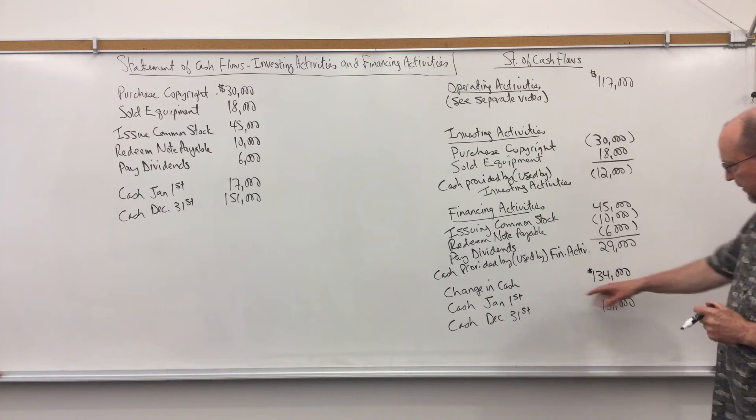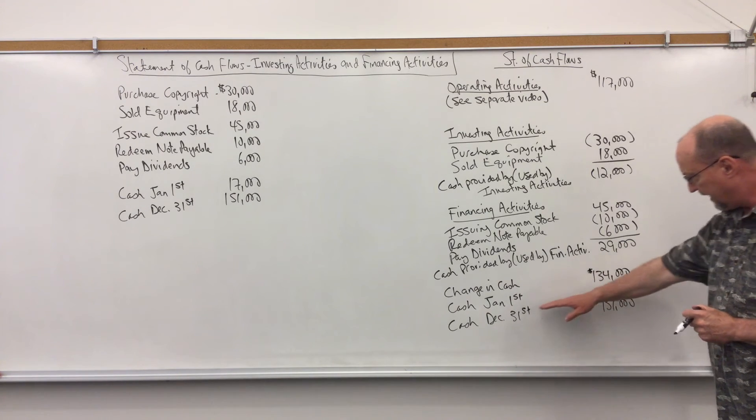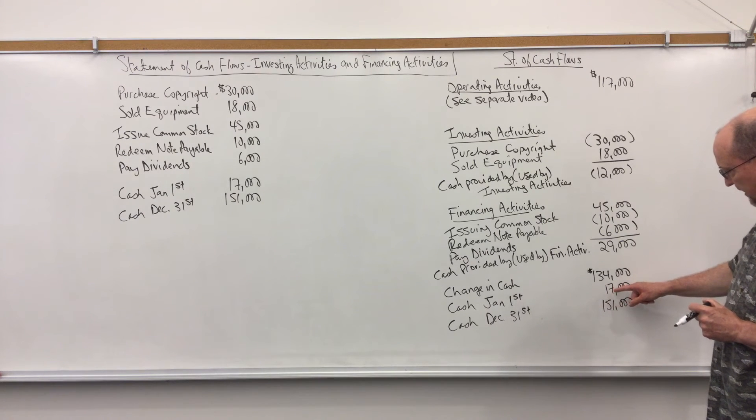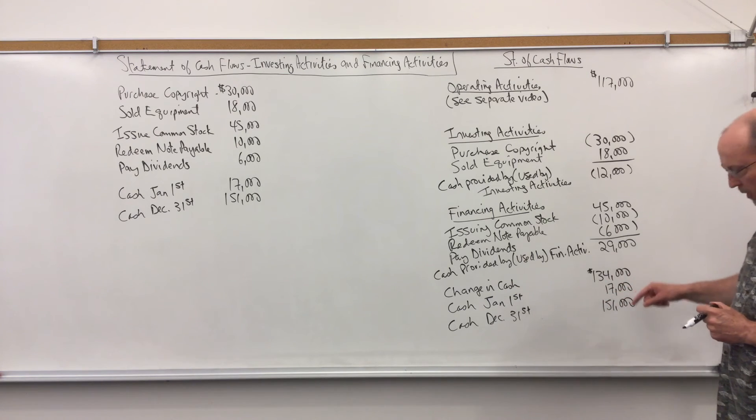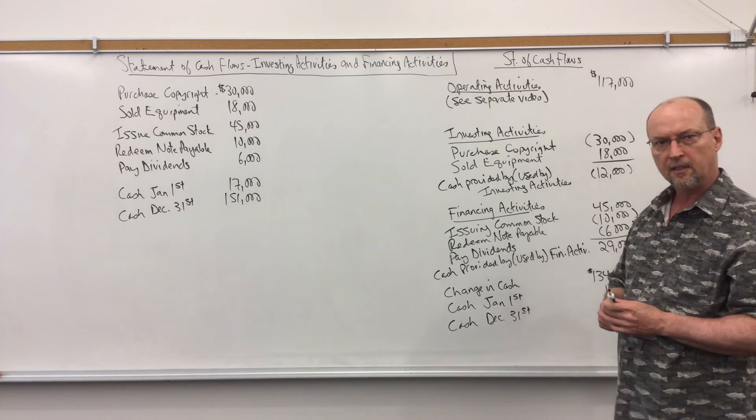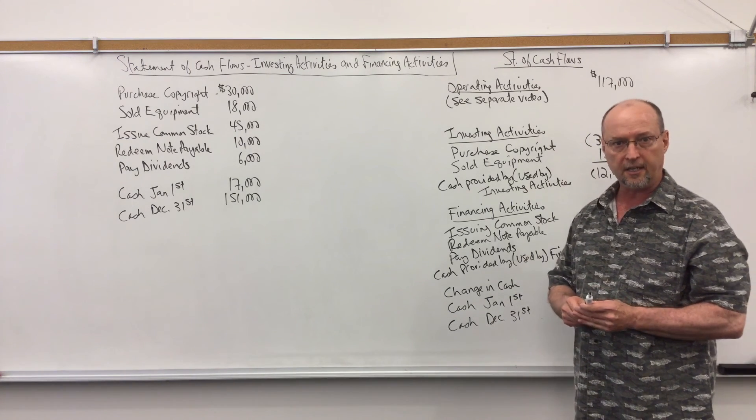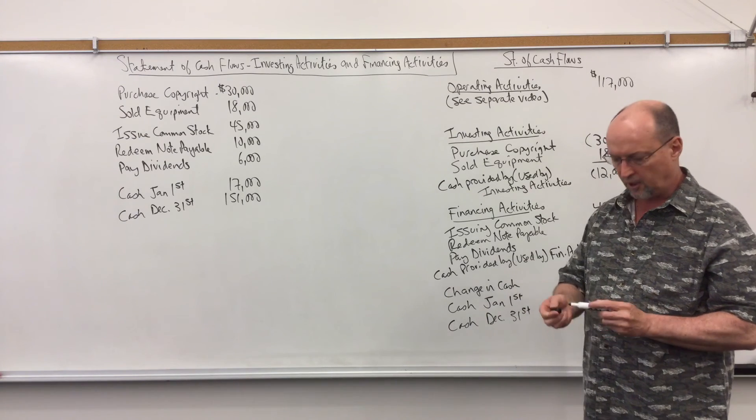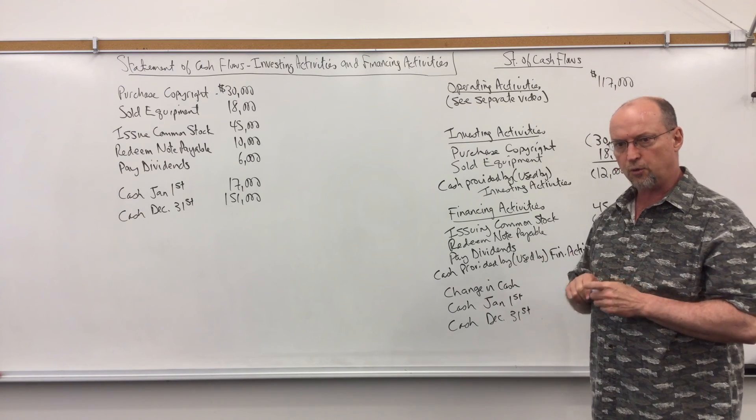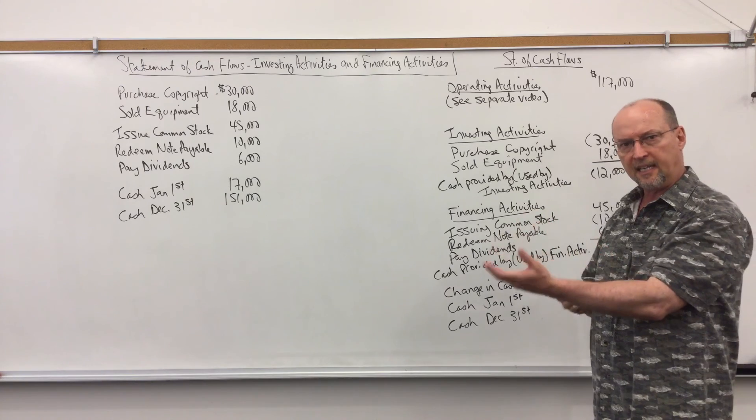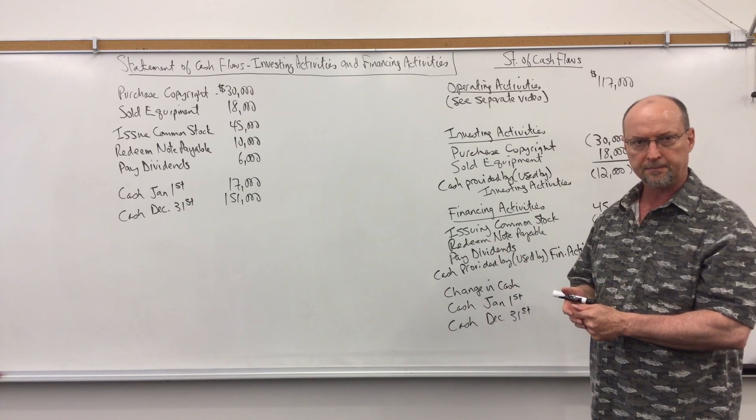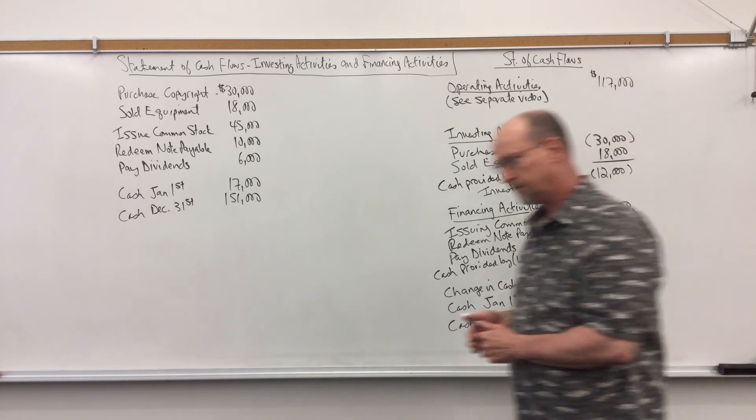And then we put the beginning of the year cash and the end of the year cash. $17,000 plus the increase in cash of $134,000 explains how I got to $151,000 in cash on the balance sheet at the end of the year. And again that is the purpose of the statement of cash flows, to explain the difference from beginning to ending cash. $134,000.